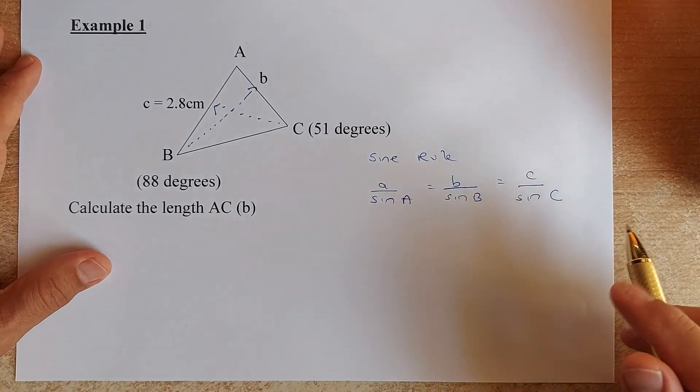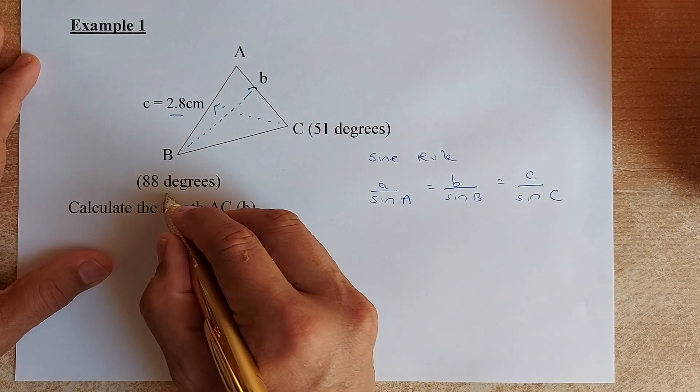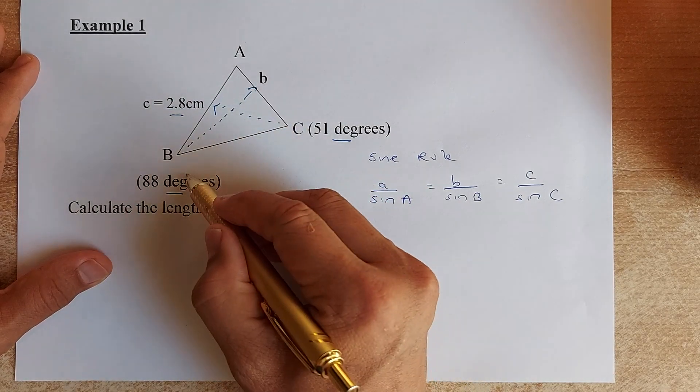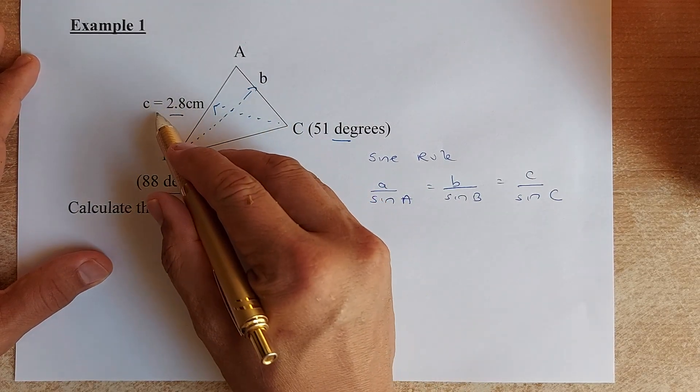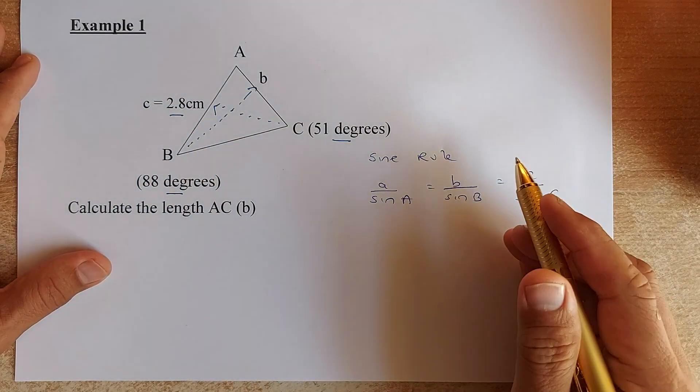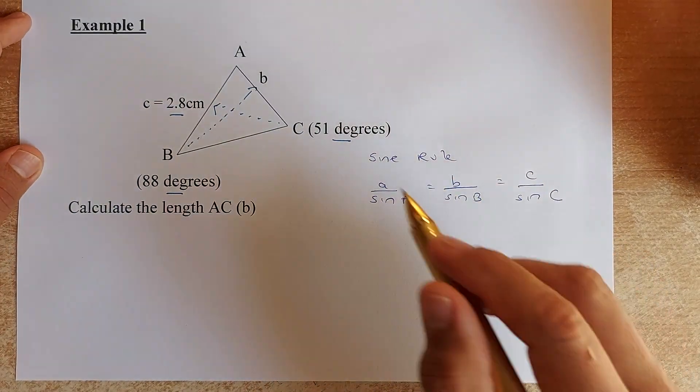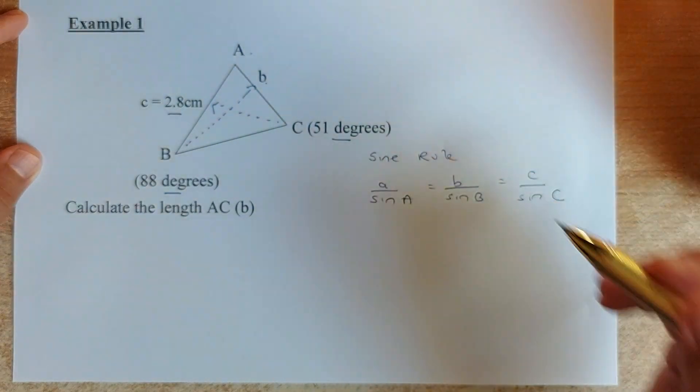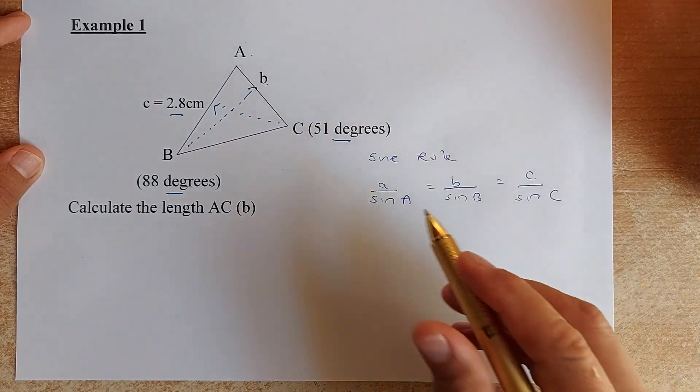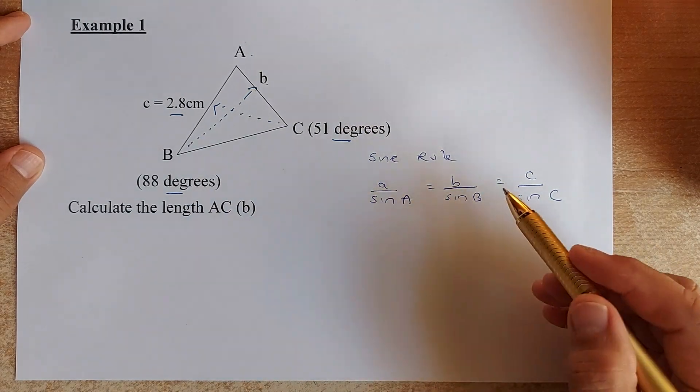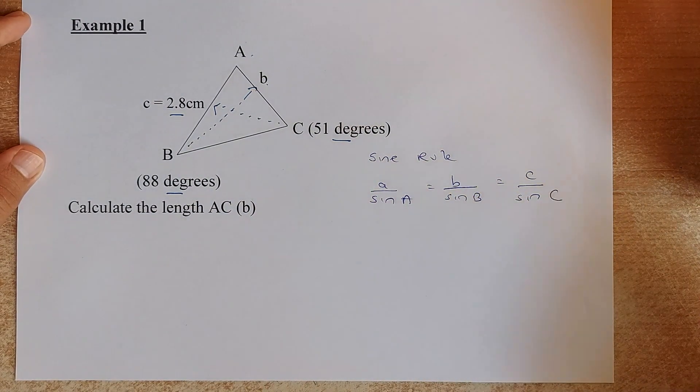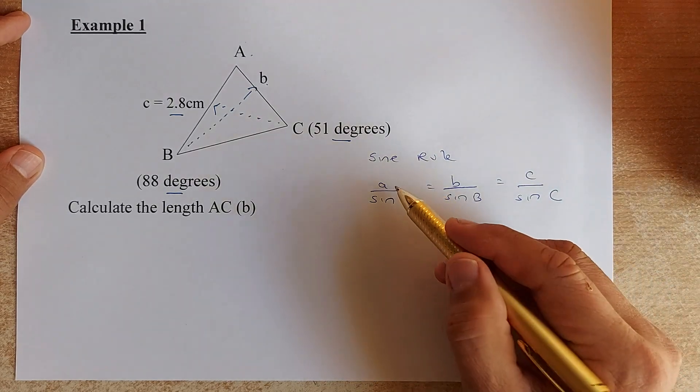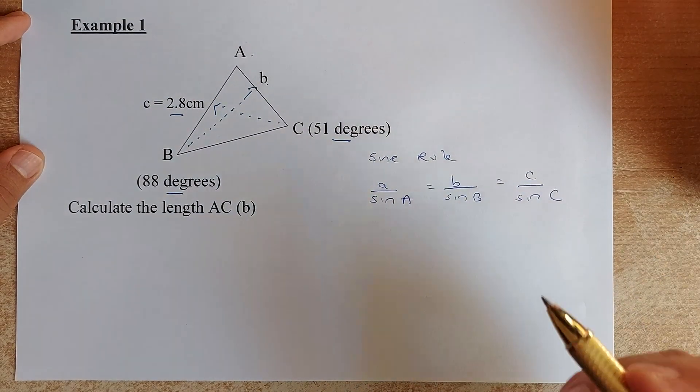We are looking at rule number one. We have three known values. This is the first value, this is the second value and this is the third value. C is angle 51, B is 88 and the side c opposite the angle C is 2.8. You are going to calculate the length AC which is also called lowercase b. To do that, we are using this formula: a/sin(A), b/sin(B) equal to c/sin(C) because we are finding the sides. We are putting the sides on top.